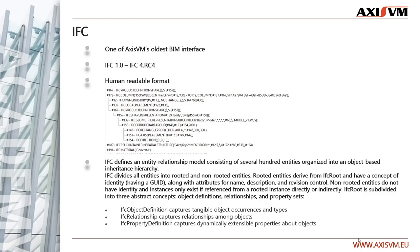A few words about IFC now. It is one of our oldest BIM interfaces. We support a wide range of IFC formats up to IFC 4. This is a human-readable format, so if you are bold enough you can open it in a text editor or a raw IFC viewer where you may as well edit it. IFC files are basically a group of entities grouped together in tree-like structures. In a tree, entities are in relation with each other. IFC divides all entities into rooted and non-rooted entities. Rooted entities derive from IFC root and have a concept of identity — they have a GUID — along with attributes for name, description and revision control. Non-rooted entities do not have identity and instances only exist if referenced from a rooted instance directly or indirectly.